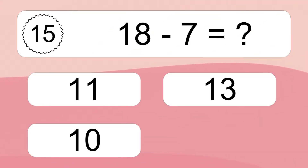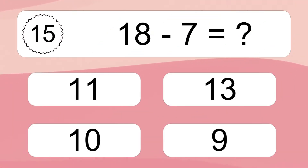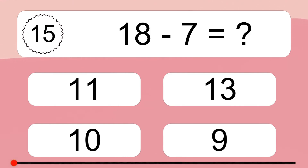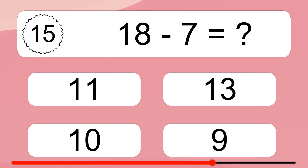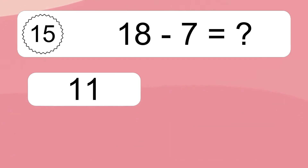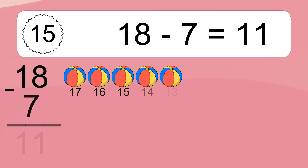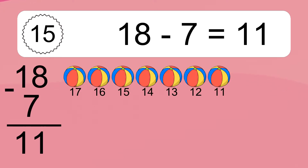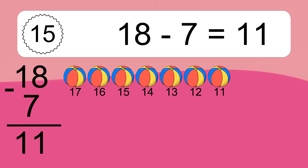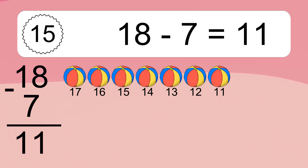18 minus 7 equals what? 18 minus 7 equals 11. Let's count it: 17, 16, 15, 14, 13, 12, 11.